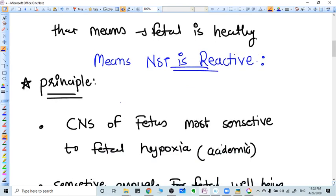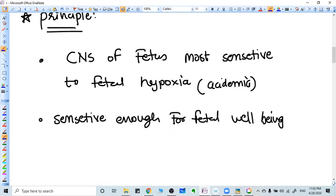What is the basic principle of this thing? For example, if we see the nervous system of the baby, it is very sensitive to the hypoxic changes. Whenever there is hypoxia, it will be blood acidity. And because of the blood acidity, the CNS will be depressed.